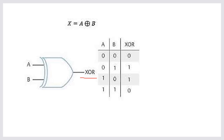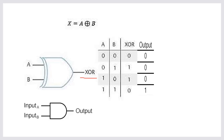Next, we consider the output for the same inputs for the AND gate. The AND gate represents multiplication of the bits: zero dot zero is zero, zero dot one is zero, one dot zero is zero, and one dot one is one.